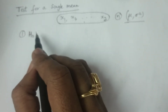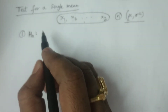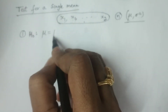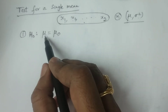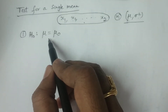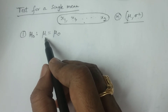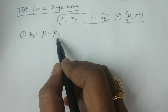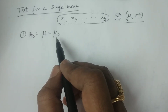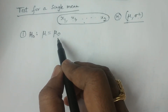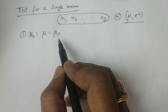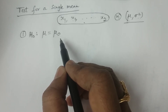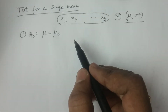The first point: null hypothesis H₀, which we consider for single mean, is mu equal to mu naught. What is mu naught? It is a specified value of mu — the population mean. So here we indicate the population mean by mu, that is mu equals mu naught. The statement we can consider is: the given sample has been drawn from the normal population.